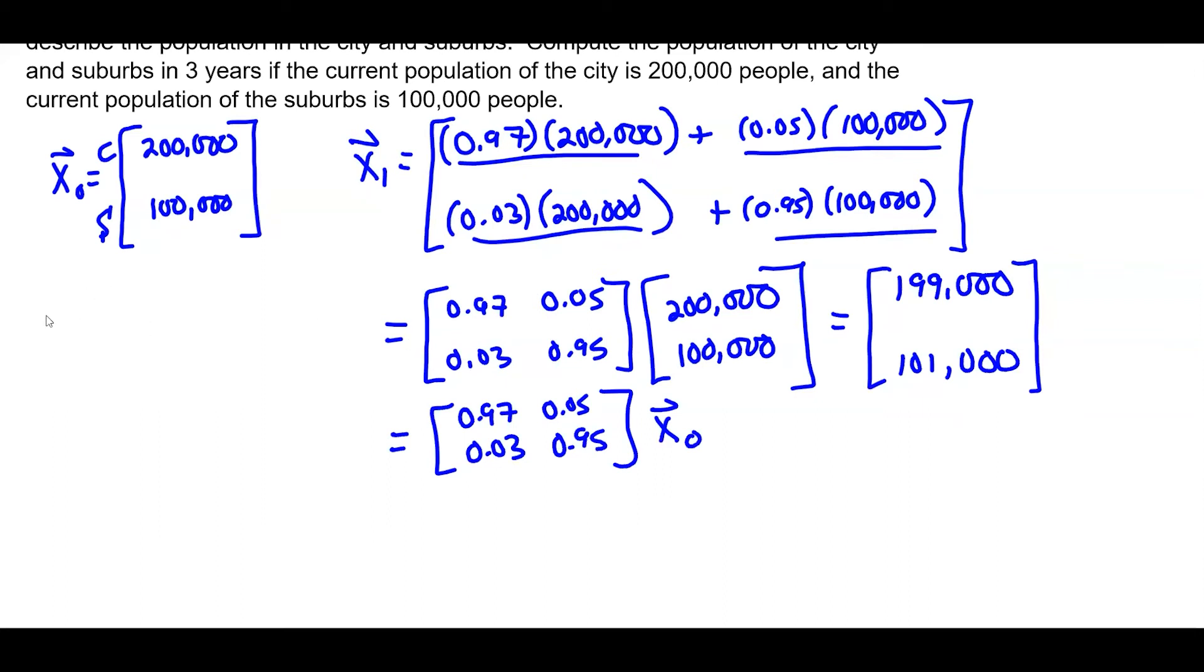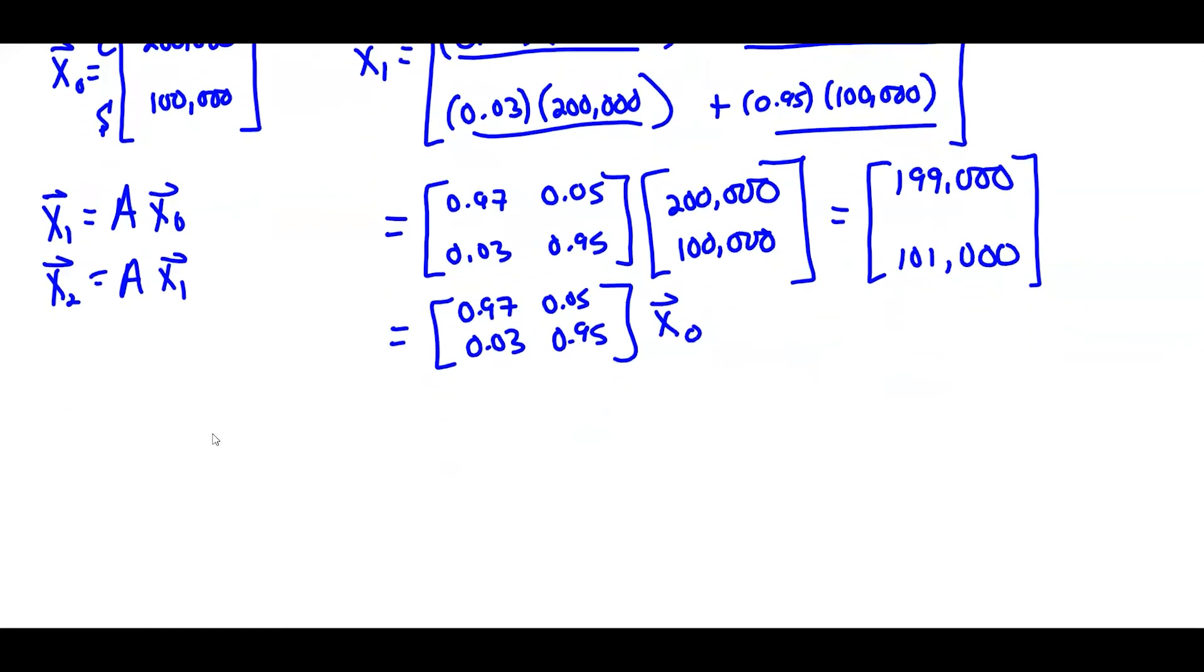So we have this relationship that X1 is equal to matrix A times X of 0. And how are we going to get X2? If we just assume this continues, then after two years, we're going to multiply the same matrix times X1. So let's find the population after two years.